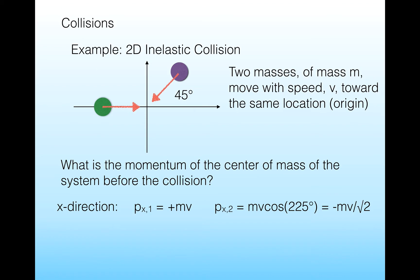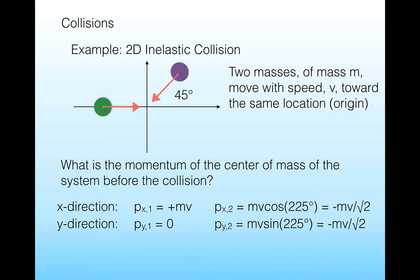Adding the x-components together, the purple one is slightly smaller in the x-direction, so we expect the system to continue moving to the right in the positive direction. For the y-direction, the green mass is easy — it's not moving in the y-direction, so its initial momentum is zero. For the purple mass, the y-component of velocity is also negative: negative one over the square root of two. So the whole system's y-momentum is negative. The center of mass is moving mostly to the right and also downward — into the fourth quadrant, the lower right.